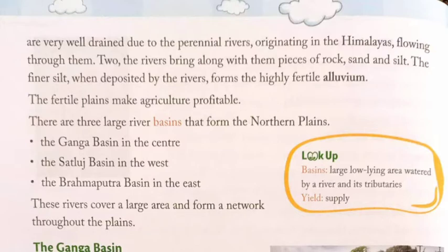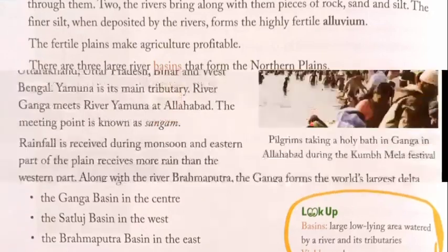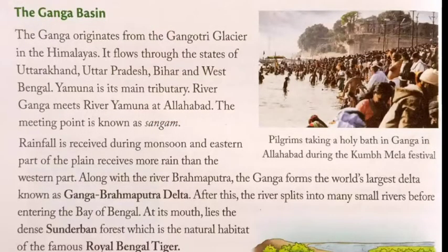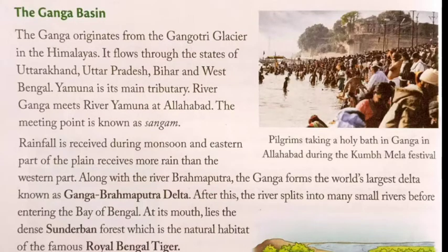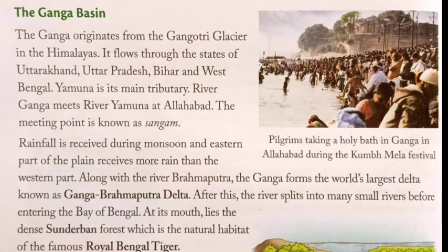Basin means a large low-lying area watered by a river and its tributaries. Yield means supply. A picture shows pilgrims taking a holy dip in the Ganga in Allahabad during the Kumbh Mela festival. The Ganga Basin — the Ganga originates from the Gangotri glacier in the Himalayas. It flows through the states of Uttarakhand, Uttar Pradesh, Bihar and West Bengal. Yamuna is its main tributary. River Ganga meets river Yamuna at Allahabad — the meeting point is known as Sangam.